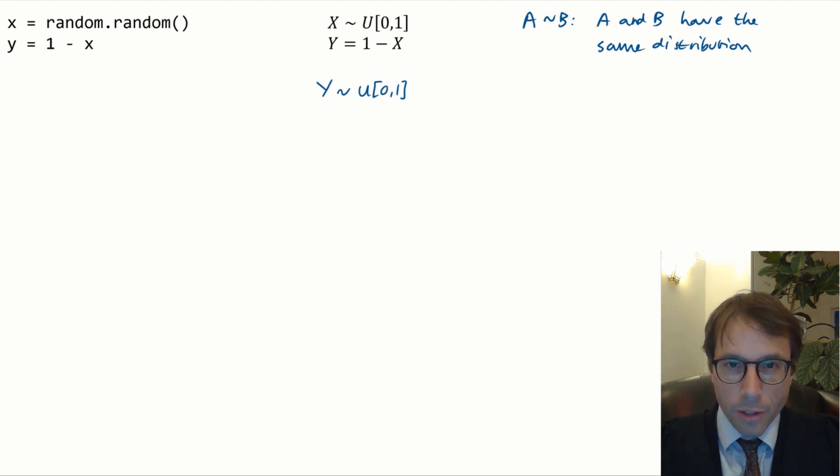If you want to make a statement about equality of values, that's where you use the equal sign. A equals b means the value of a is always equal to the value of b. In this code, the value of y is always equal to the value of 1 minus x. So twiddles for distributions equals for values.